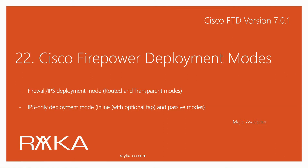Cisco Firepower deployment modes are the methods to insert Firepower into the network as a firewall IPS device or as an IPS-only device. In firewall IPS mode, you have the option to choose routed or transparent mode, and as an IPS-only device, you can choose between inline and passive modes. We discussed routed and transparent mode in the previous sections. In this section, we will discuss IPS-only inline and passive mode.